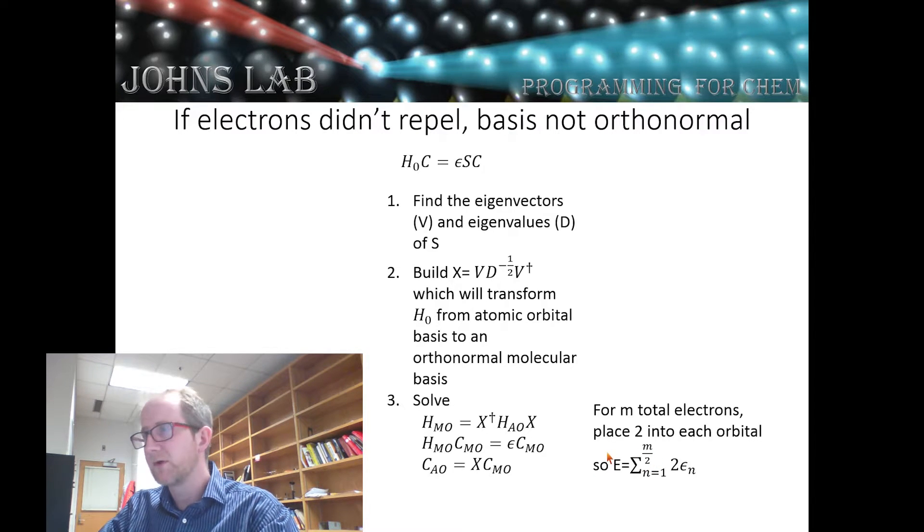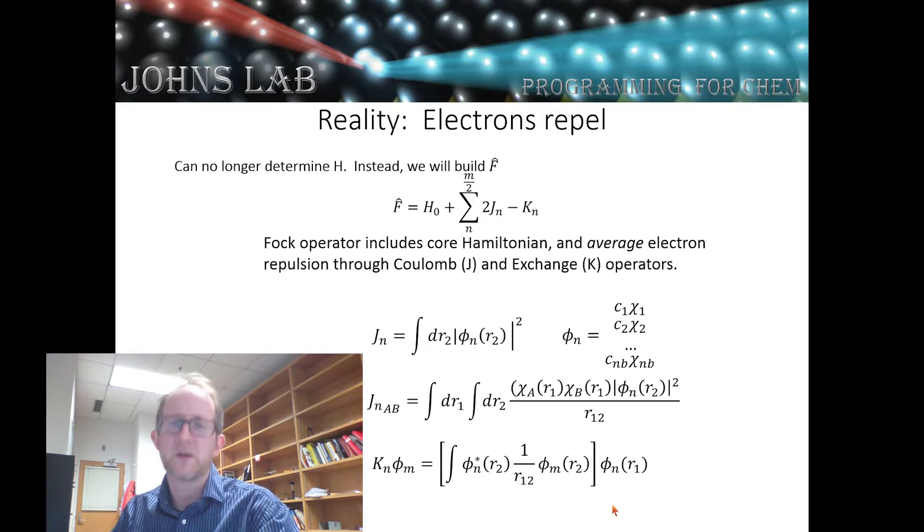And that's it. No problem. Where we come into trouble is, of course, the electrons actually repel each other. And so we have to account for electron-electron interactions. The way that we do this is by building a new operator called the Fock operator. And the Fock operator consists of our single electron core Hamiltonian plus the Coulomb and exchange operators. So the Coulomb operator is an operator which says given an electron in some orbital, in a molecular orbital, what is the average electron repulsion that an electron in a different orbital would feel?